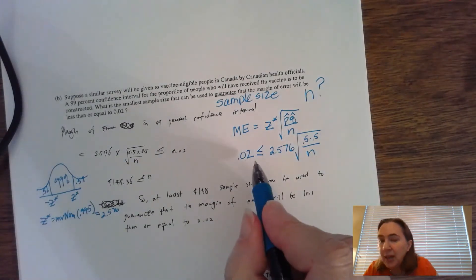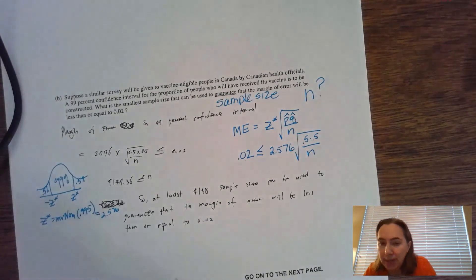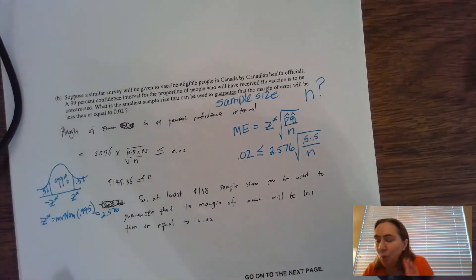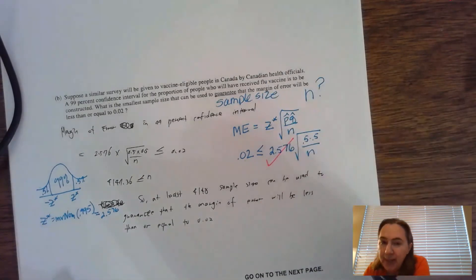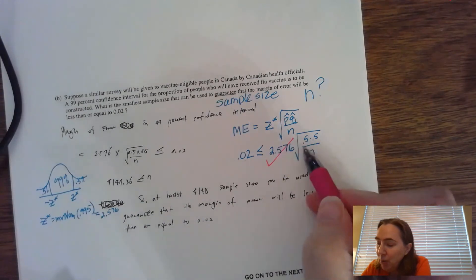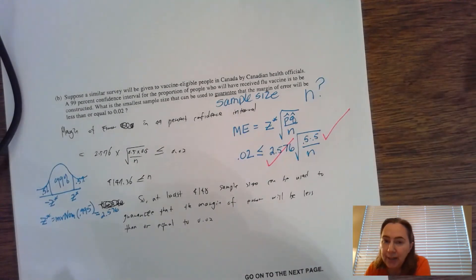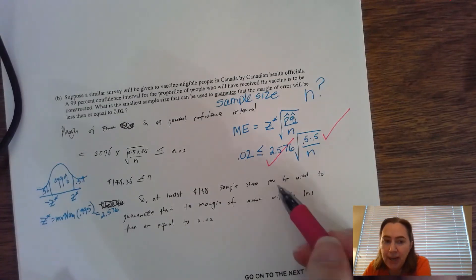In terms of checkmarks at this point, what I'm looking for is: did you set it up correctly? I'm looking for the right z* —that's check one. Do you have the 0.02 and the 0.5, 0.5? That is the second check in the setup.